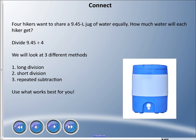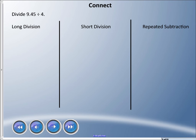Going with our hiking theme: four hikers want to share a 9.45-liter jug of water equally. How much water will each hiker get? We're going to divide 9.45 by four. I want to look at three methods today: long division, which we already know; short division, which is new; and repeated subtraction, which will also work. Decide what works best for you.